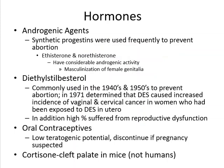Hormones may lead to some abnormalities. Androgenic agents, frequently used to prevent abortion, may cause masculinization of female genitalia. Diethylstilbestrol (DES) was commonly used in the early 1940s to 1950s to prevent abortion. In 1979, it was determined to be a teratogen, having increased the incidence of vaginal and cervical cancer in women who had been exposed to it in utero. Those exposed also suffer from reproductive dysfunctions.